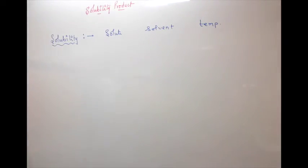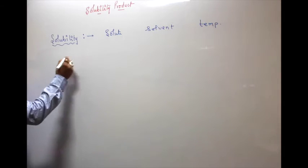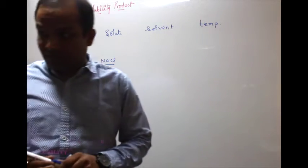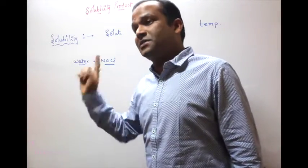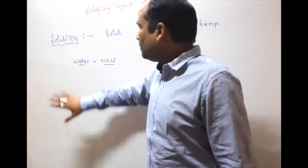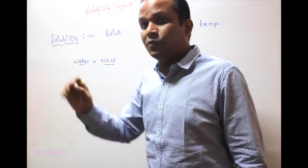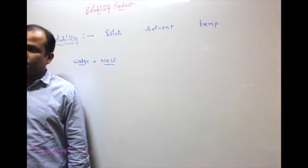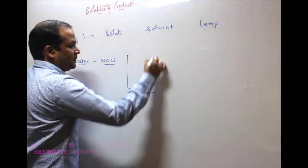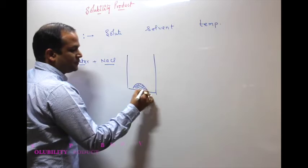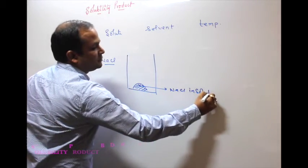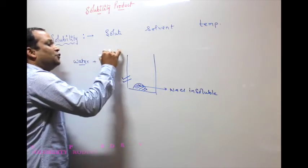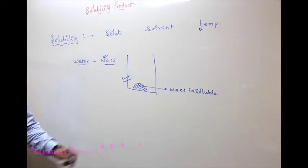Suppose we have a glass of water and we want to dissolve NaCl in it. The amount of NaCl which can be dissolved in water at a fixed temperature is constant. If I put two spoons of NaCl in water, it will become insoluble because the capacity of solvent for a given solute at a given temperature is fixed. So what is solubility?